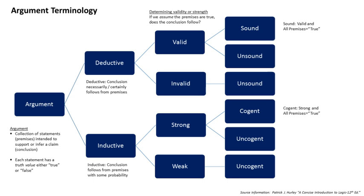An example of deduction would be: A is true, therefore we can deduce that B, C, and D are true. An example of induction would be: B, C, and D are observed to be true, therefore A might be true — A is a reasonable explanation for B, C, and D being true. For example, a large enough asteroid impact would create a very large crater and cause a severe impact winter that could drive the non-avian dinosaurs to extinction. We observe that there is a very large crater in the Gulf of Mexico dating to very near the time of the extinction of the non-avian dinosaurs, therefore it is possible that this impact could explain why the non-avian dinosaurs became extinct. Note however that this is not necessarily the case — other events also coincide with the extinction, for example, the release of volcanic gases during the formation of the Deccan Traps in India.